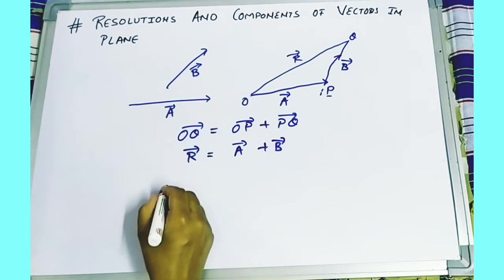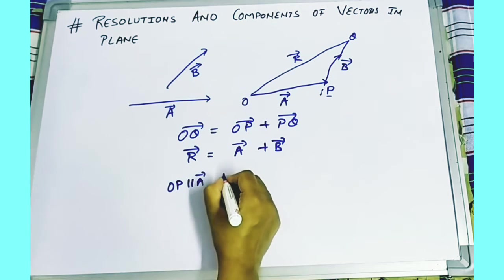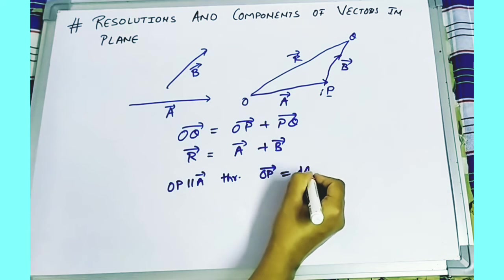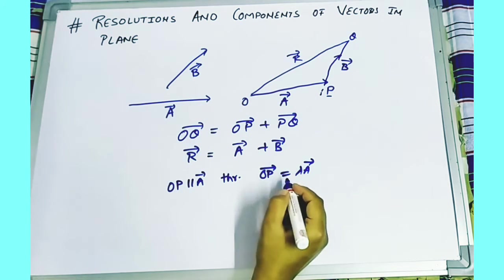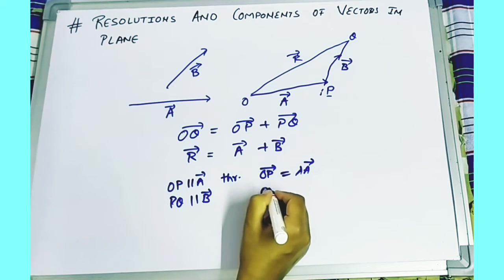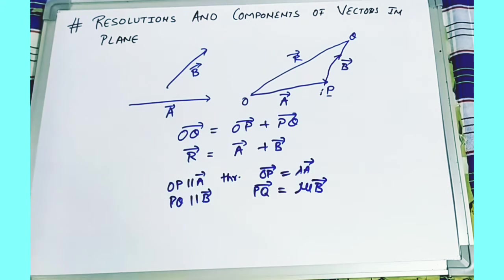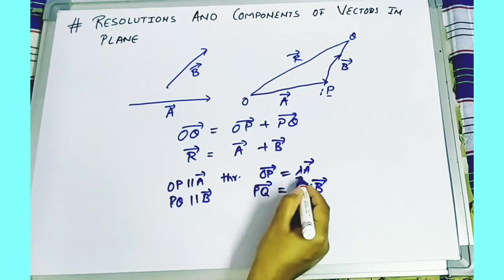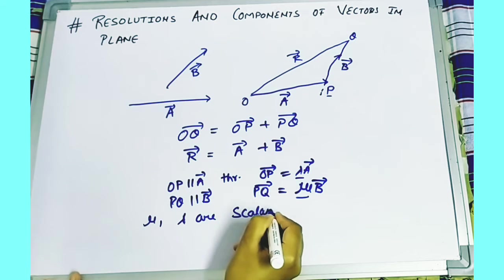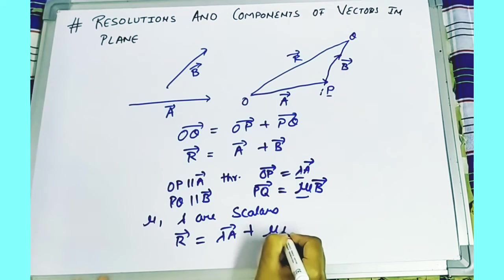If you see here, the line OP is parallel to vector A because we made it so. We can say that OP vector equals lambda times A vector. We already know that if two vectors are parallel, we can write this. And PQ is parallel to B vector, so we can write PQ vector equals mu times B vector. Here mu and lambda are scalars.